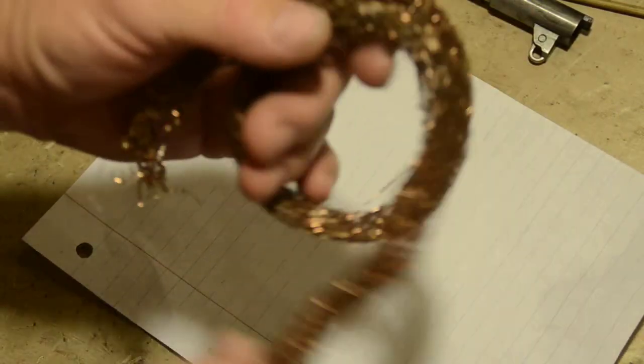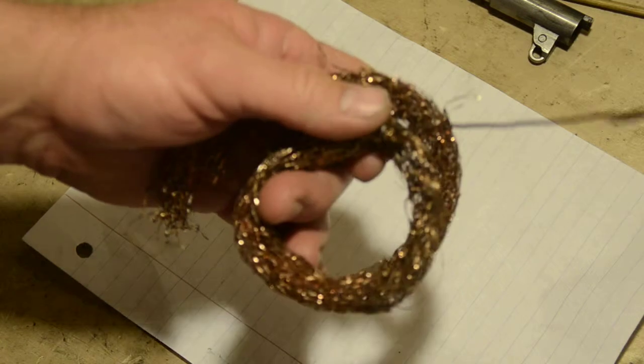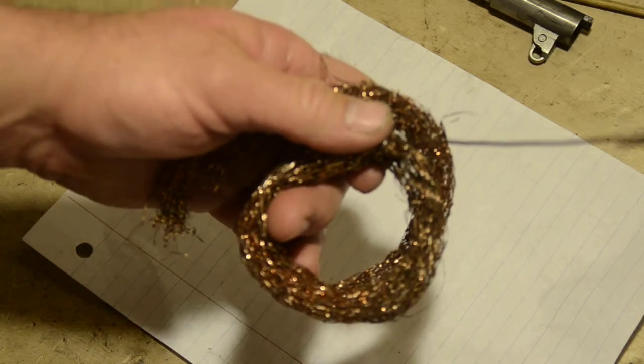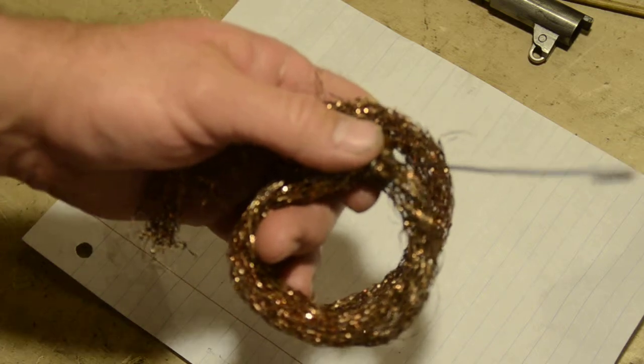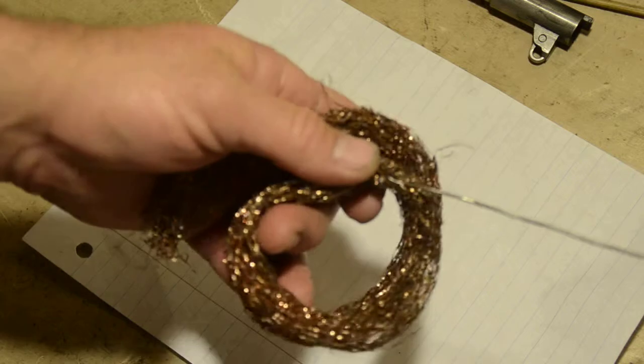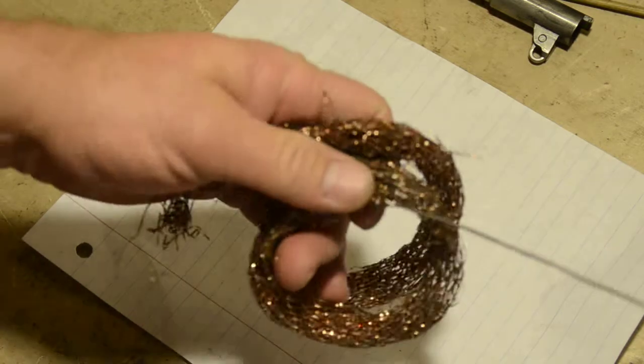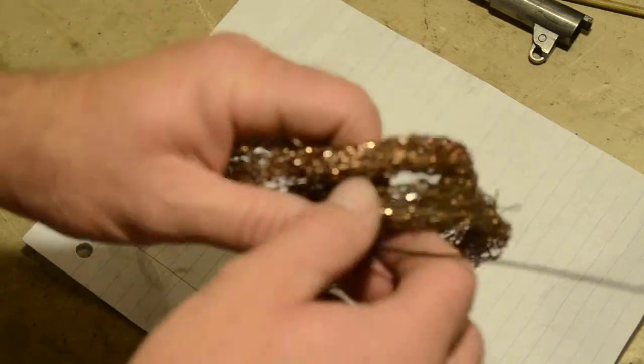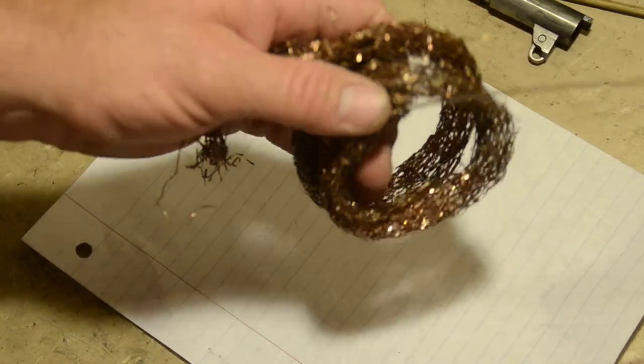Copper wool pads can be found in any grocery store. They're kind of like a steel wool pad except they won't rust because they're copper. Both the wire and the copper are much, much softer than the metal in your barrel, so there is no danger of hurting your barrel.